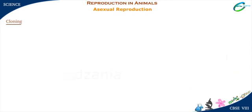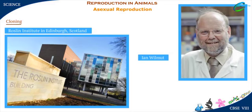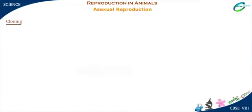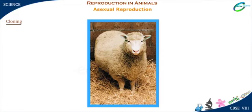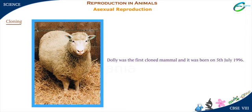Cloning is the production of an identical or genetically similar copy of a cell, an organ, or a complete organism. Ian Wilmott and his colleagues performed animal cloning successfully for the first time at the Roslyn Institute in Edinburgh, Scotland. They cloned a sheep which was named Dolly. Dolly was the first cloned mammal and was born on 5th July 1996.